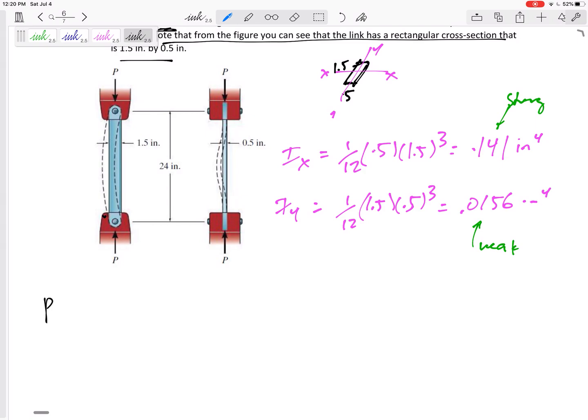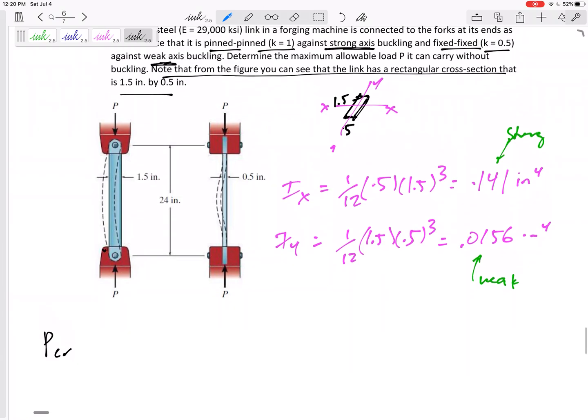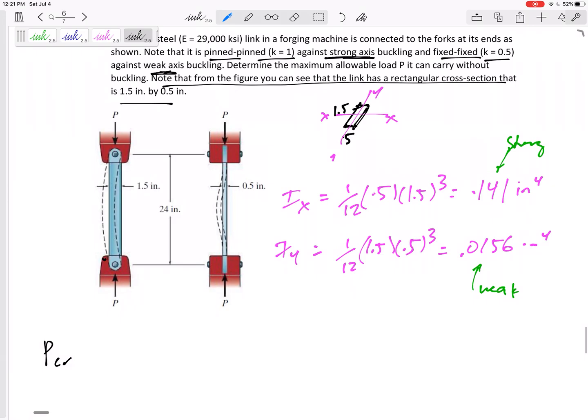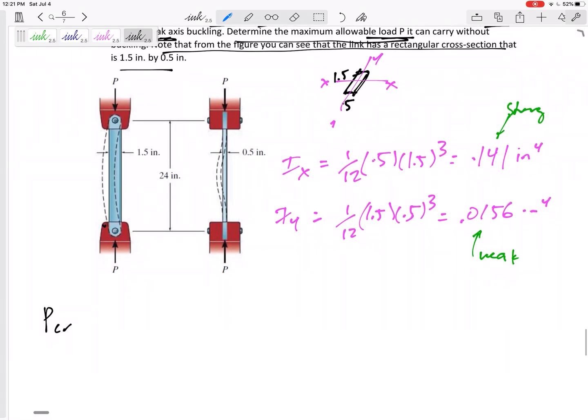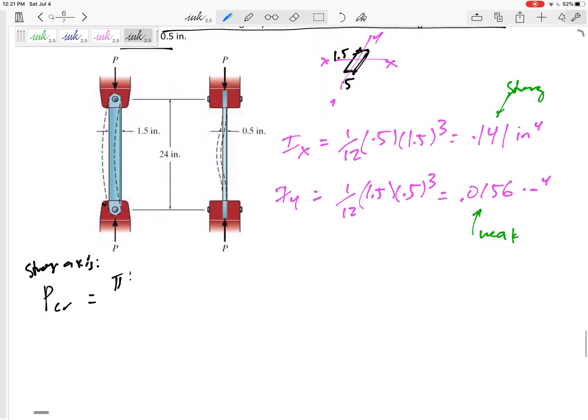Okay, so the P critical - first let's look at strong and weak, look at them separately. Figure out which one is going to buckle easiest, which one is going to buckle at the smaller force. We're trying to find the maximum allowable load P that it can carry without buckling. Let's look at the strong axis first.